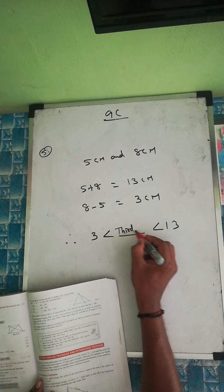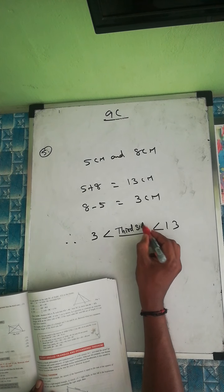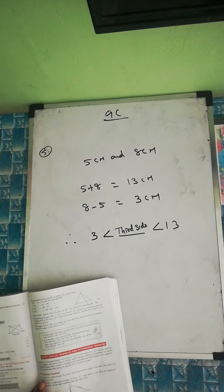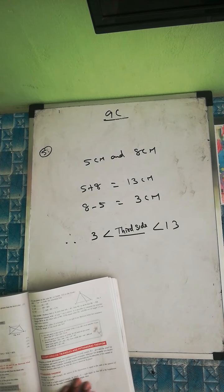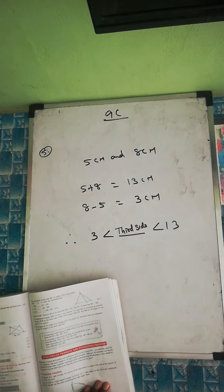So the third side surely falls between 3 and 13. Write the answer as: 3 < third side < 13. That completes this exercise.